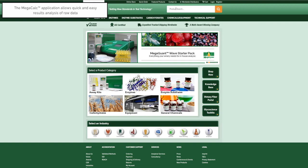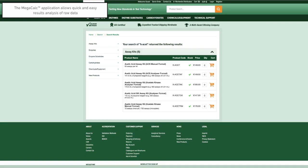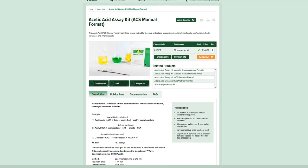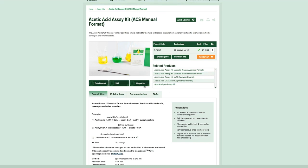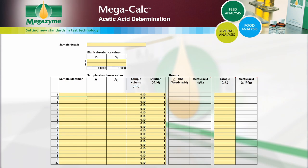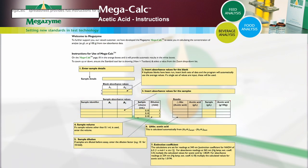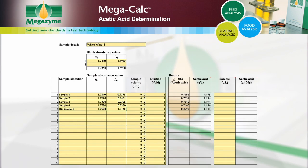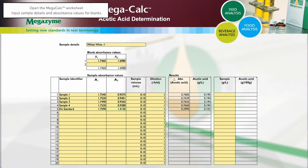Megazyme has also developed specific Excel-based MegaCalc applications for each Megazyme kit to allow quick and easy results analysis. Results can be analyzed using the MegaCalc application specific to this acetic acid kit, which is available to download free of charge from the Megazyme website. The MegaCalc spreadsheet provides full instructions for use. Open the MegaCalc worksheet and input the following.